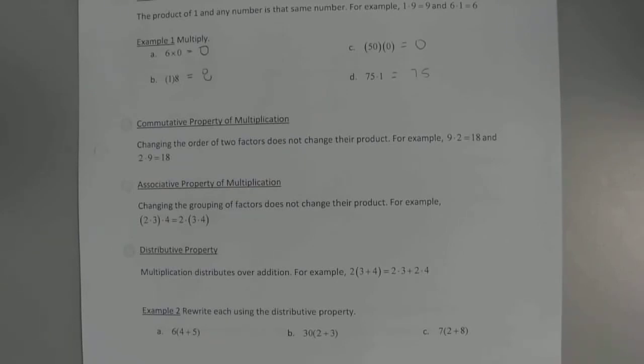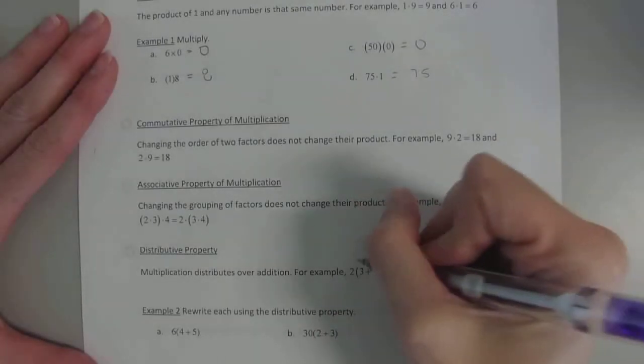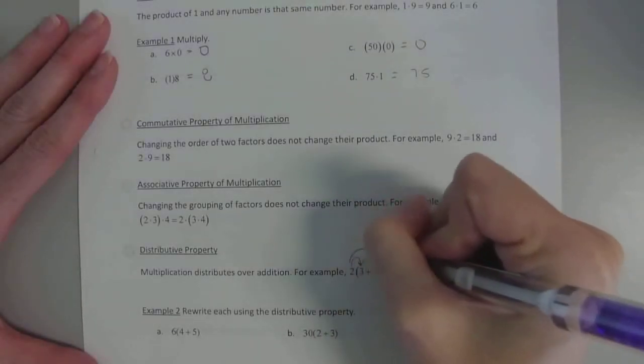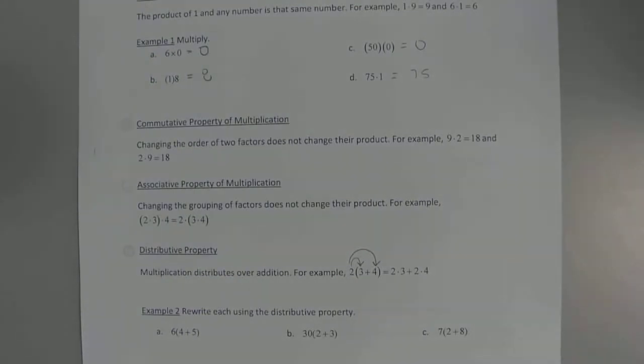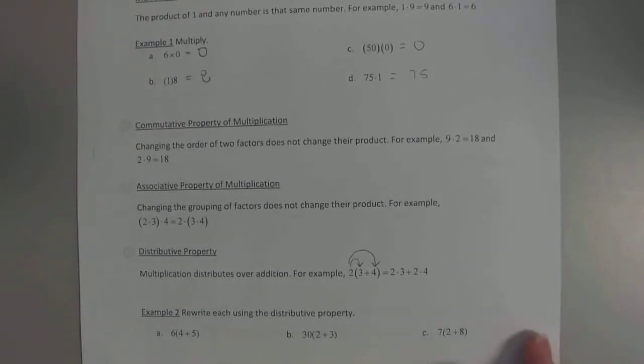This is a new one that somebody kind of started talking about - factoring and distributing. The distributive property means if you have this number out here, you can do 3 + 4 and get 7, and 7 × 2 is 14. Or it's the same thing as saying you can do 2 × 3 and 2 × 4 and add them. So all they did was take 2 into 3, so they got 2 × 3, 2 into 4, they got 2 × 4 is 8. 8 + 6 is 14. You get the same answer either way.